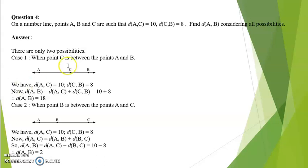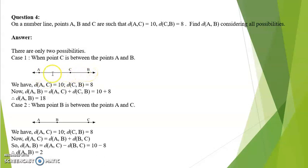Case 1 is where point C lies in between A and B. We have distance AC as 10 and distance CB as 8. Now AB is equal to AC plus CB, that is 10 plus 8, which is equal to 18.